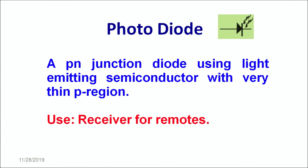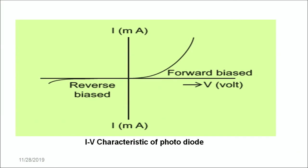Another type of diode is a photodiode. A photodiode is basically a p-n junction diode which uses light-emitting semiconductor material with a very thin p region. This is the symbol of the photodiode. The photodiode receives light and converts it into electrical current. It is basically used as receivers for remotes. A photodiode primarily works as a forward bias diode. Beyond a certain voltage value, there is a sharp increase in current, and the prime region in which the photodiode works is the first quadrant of the graph — that is, the forward bias.